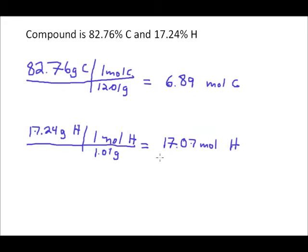So we're getting very close to determining our empirical formula. Let's consider these values: 6.89 and 17.07. We want to find the ratio of these numbers. The easiest way to do that is to divide each of the numbers by the smaller of the two. 6.89 divided by itself will give a value of 1.